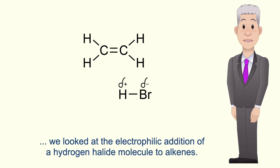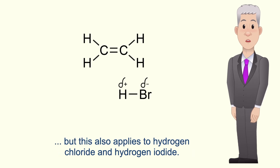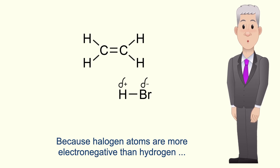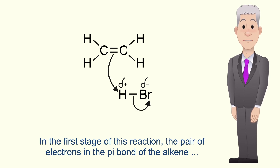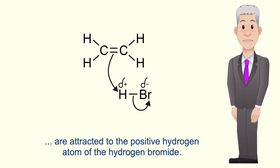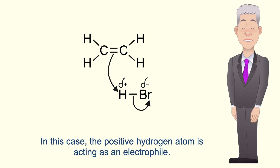In the last couple of videos we looked at the electrophilic addition of a hydrogen halide molecule to alkenes. We looked at the addition of hydrogen bromide, but this also applies to hydrogen chloride and hydrogen iodide. Because halogen atoms are more electronegative than hydrogen, hydrogen halide molecules have a permanent dipole. In the first stage of this reaction the pair of electrons in the pi bond of the alkene are attracted to the positive hydrogen atom of the hydrogen bromide, and in this case the positive hydrogen atom is acting as an electrophile.